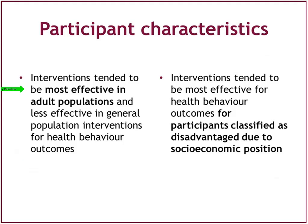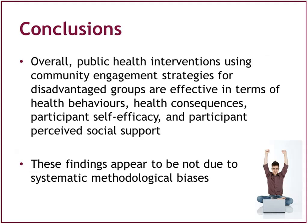In terms of participants, interventions tended to be most effective in adult populations and less effective in general populations — meaning interventions delivered to a whole city or area, not targeting specific age groups. Interventions tended to be most effective for health behavior outcomes for participants classified as disadvantaged due to socioeconomic position, compared to other types of health inequalities we looked at. Overall, public health interventions using community engagement appear to be effective across all outcomes we looked at. The findings did not appear to be due to any kind of systematic methodological biases — findings appear robust across different methodological types and quality assessments.